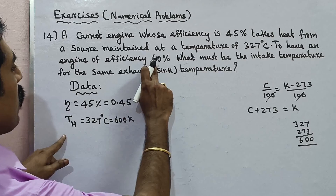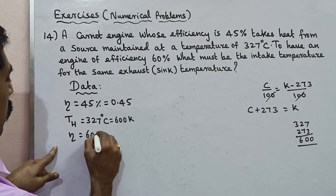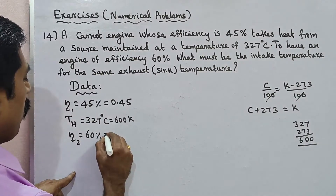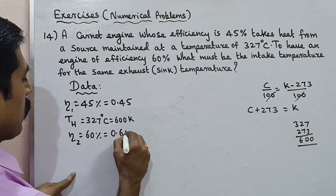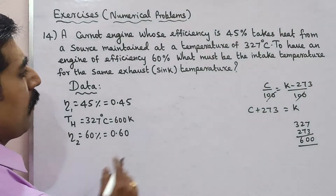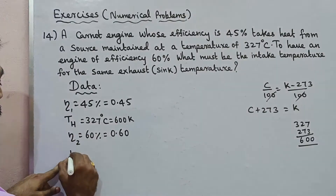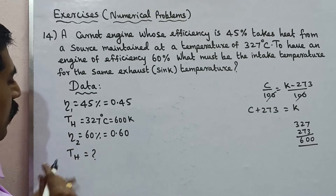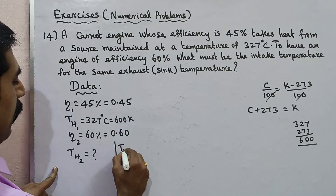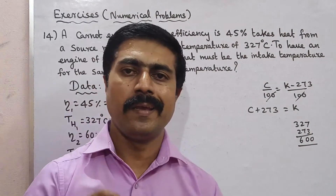For the second case, efficiency eta₂ is equal to 60%, and as a fraction that is 0.60. We now have TH1 and TH2 as two different intake temperatures. The condition is TL is constant throughout.